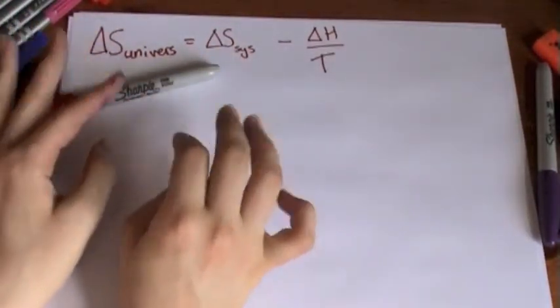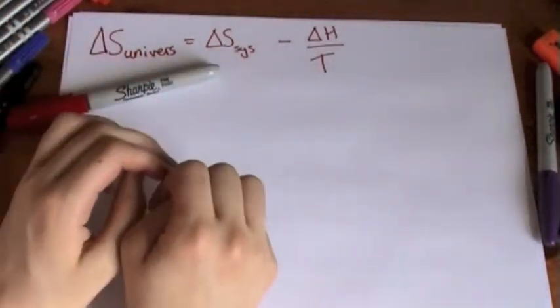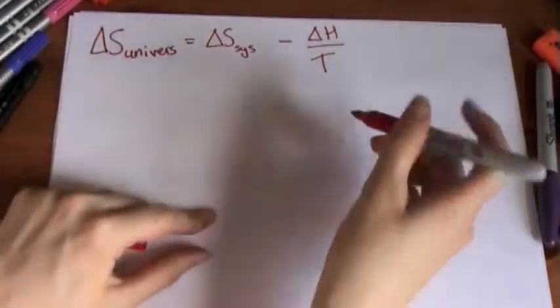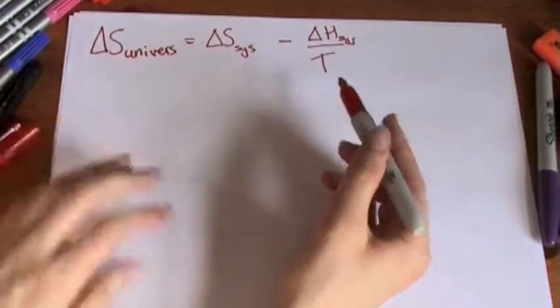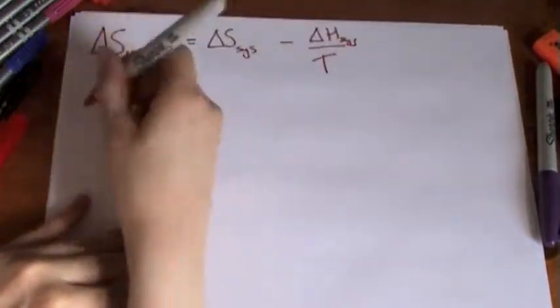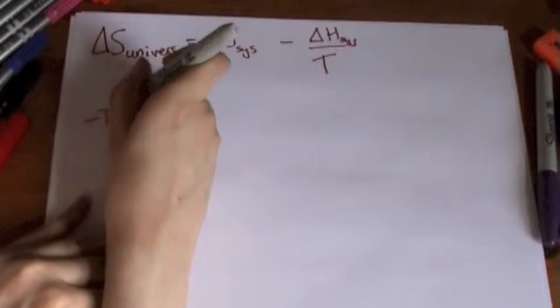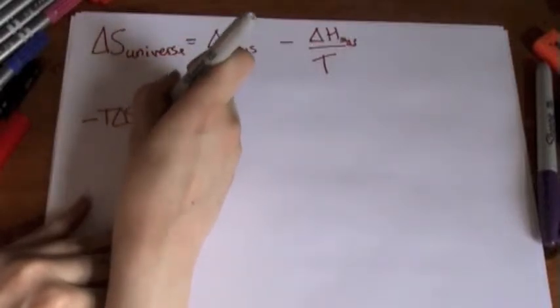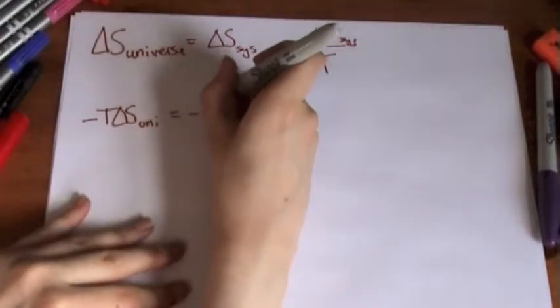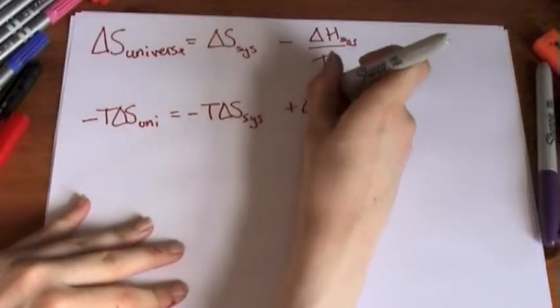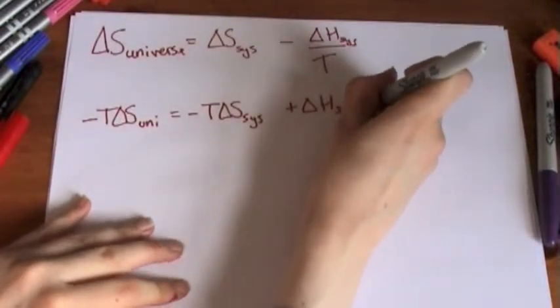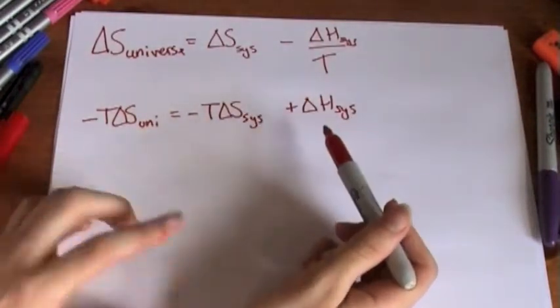And then if we times everything by minus T, we end up with minus T delta S uni equals minus T delta S sys add delta H sys.